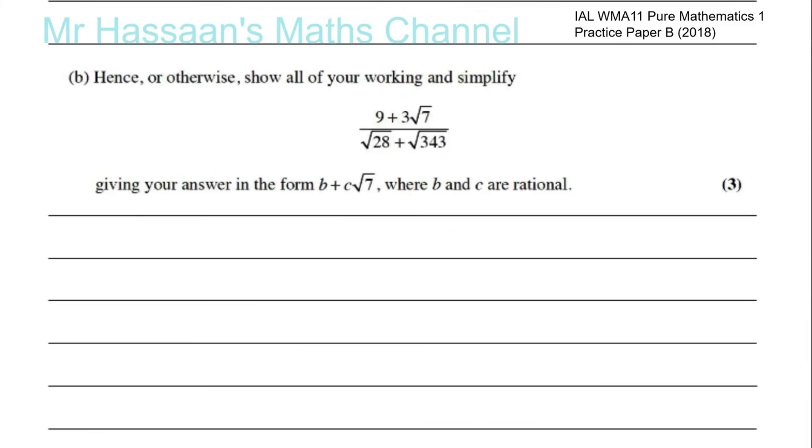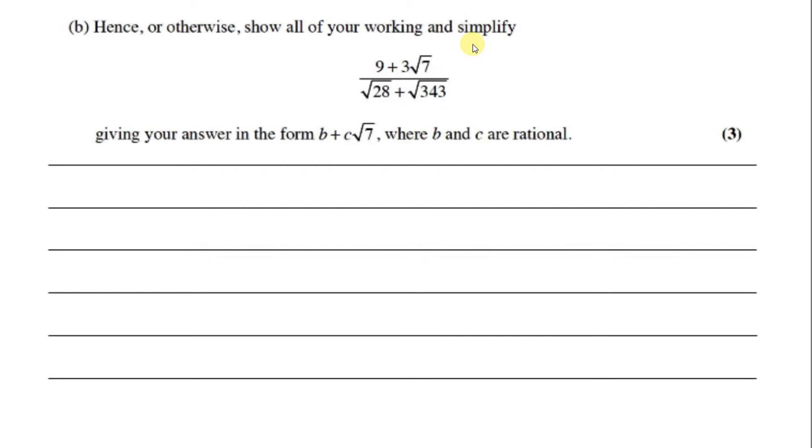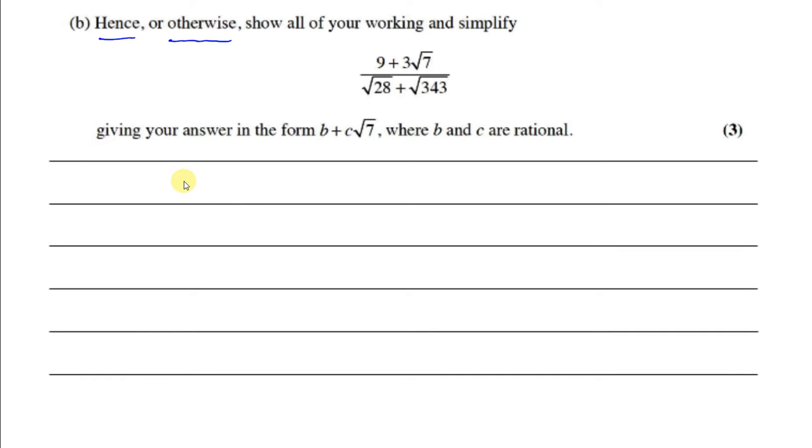Part B says hence or otherwise, show all of your working and simplify. Now hence, whenever you see the word hence, it means what you've just done is relevant to answering this question. It will help you to answer this question. If it says hence or otherwise, then you have the option to try and do it in another way. But generally when it says hence, it means what you've just done is going to help you in your question, and that's why they want you to use what you've just done to answer the question.